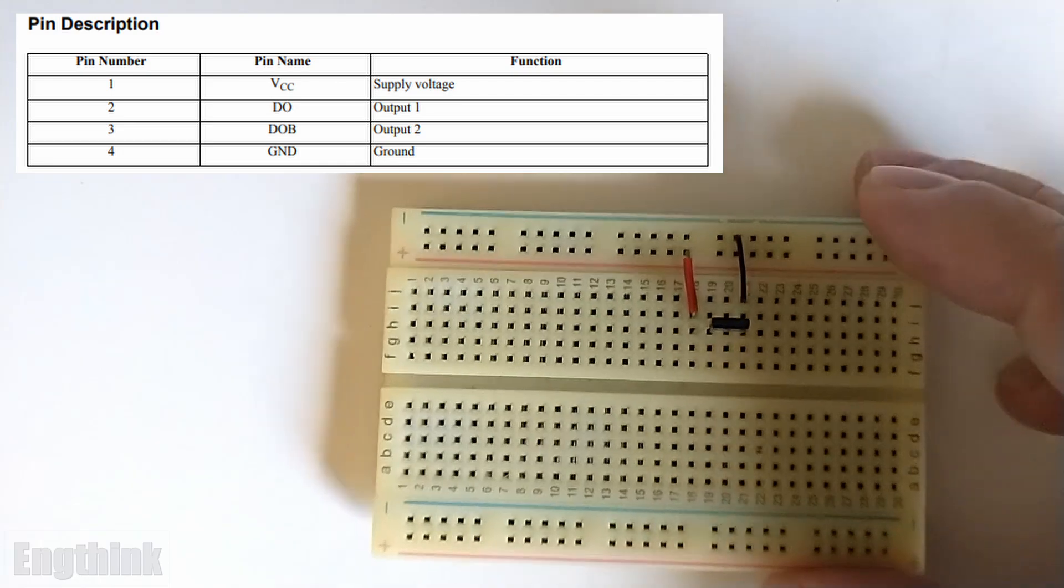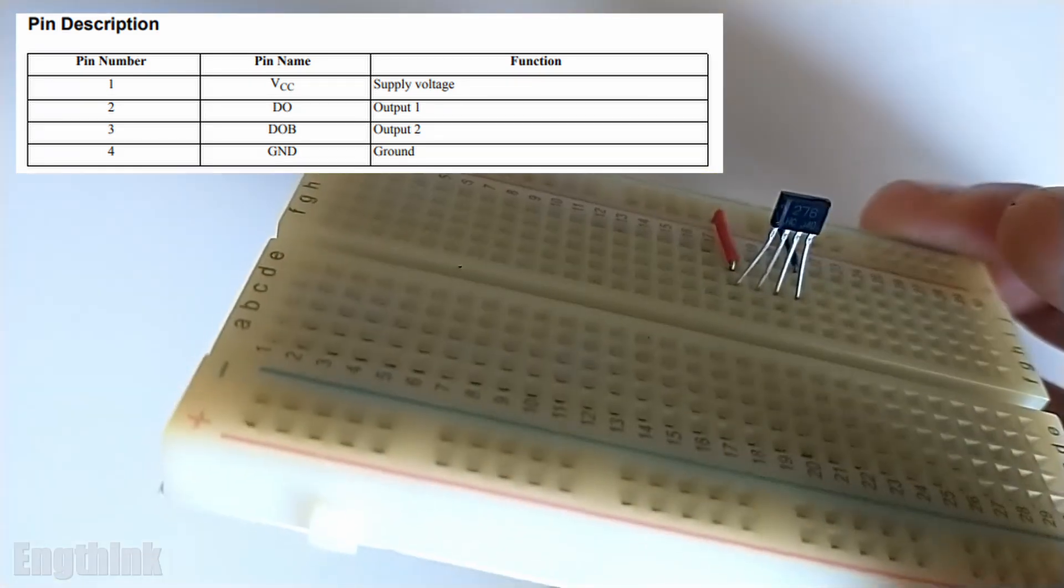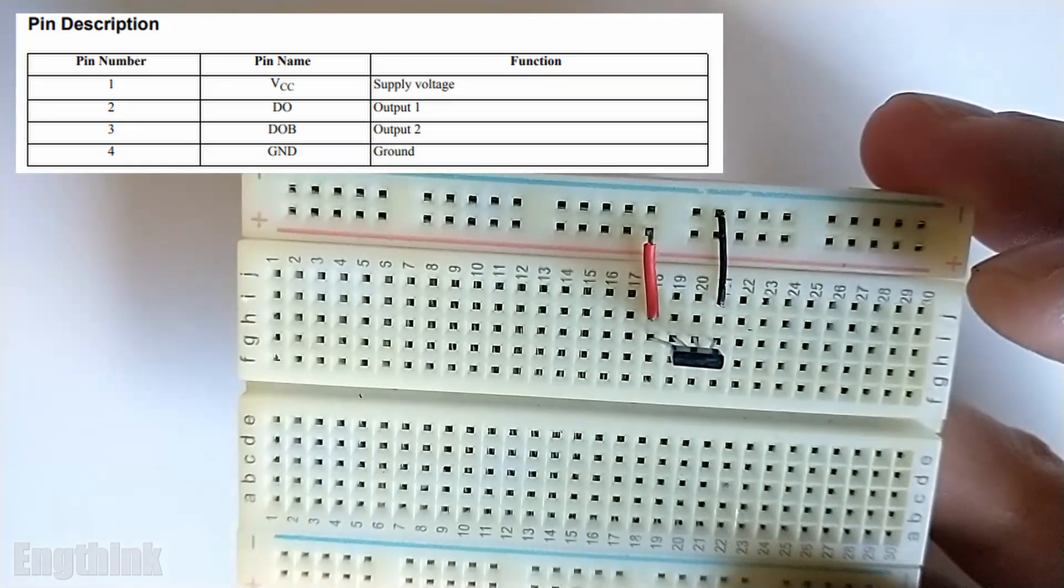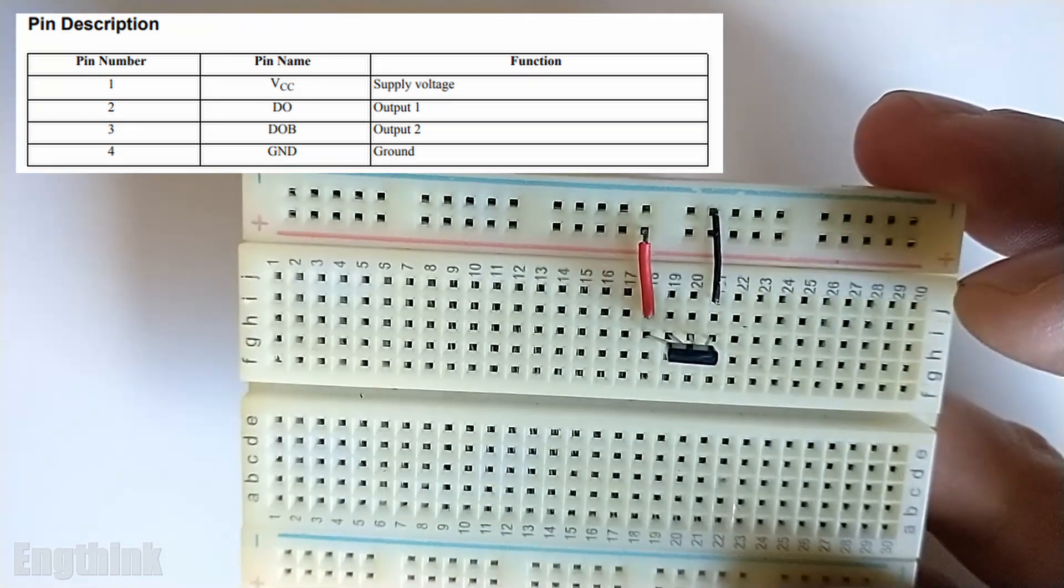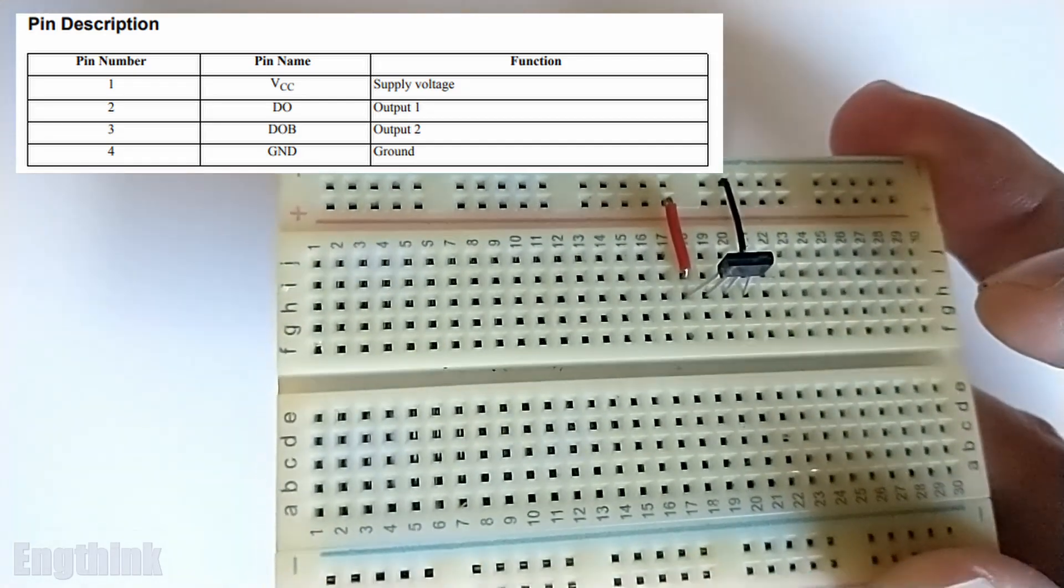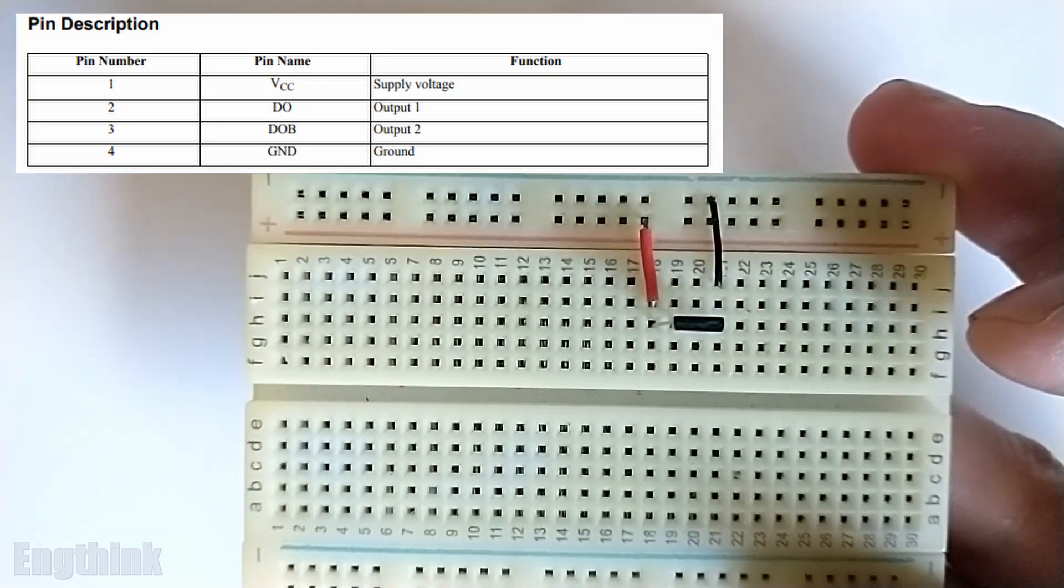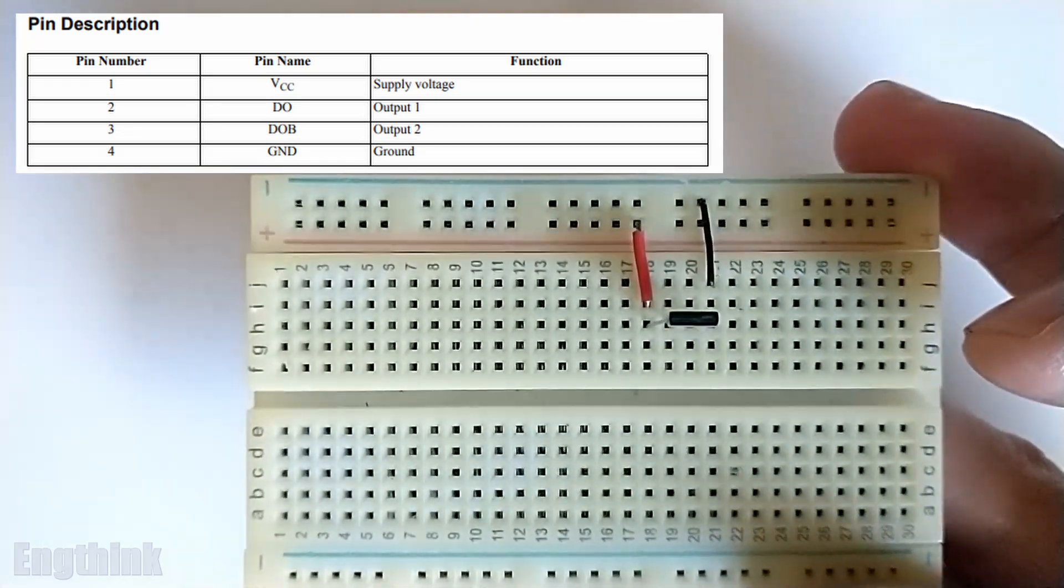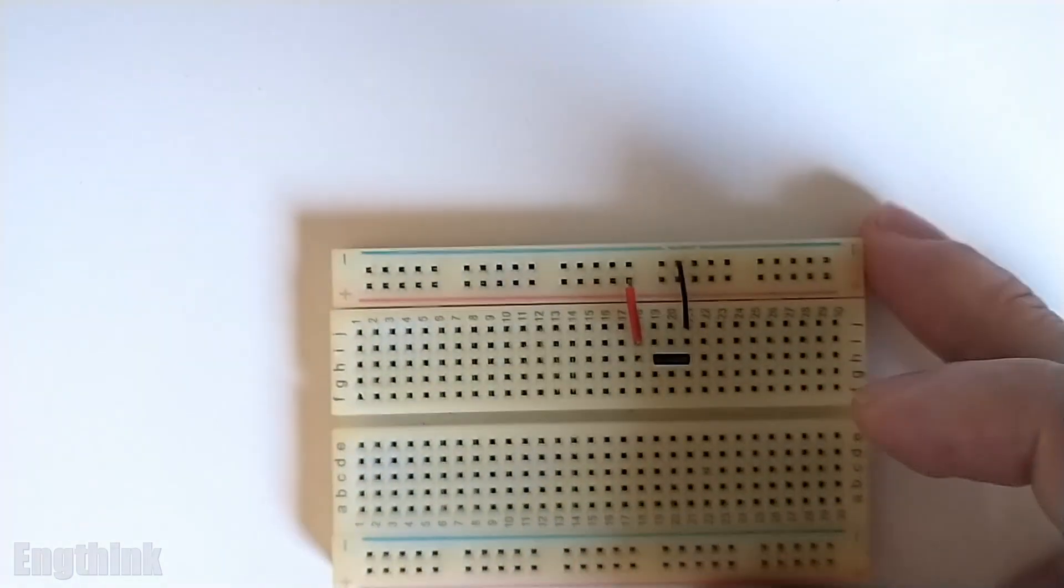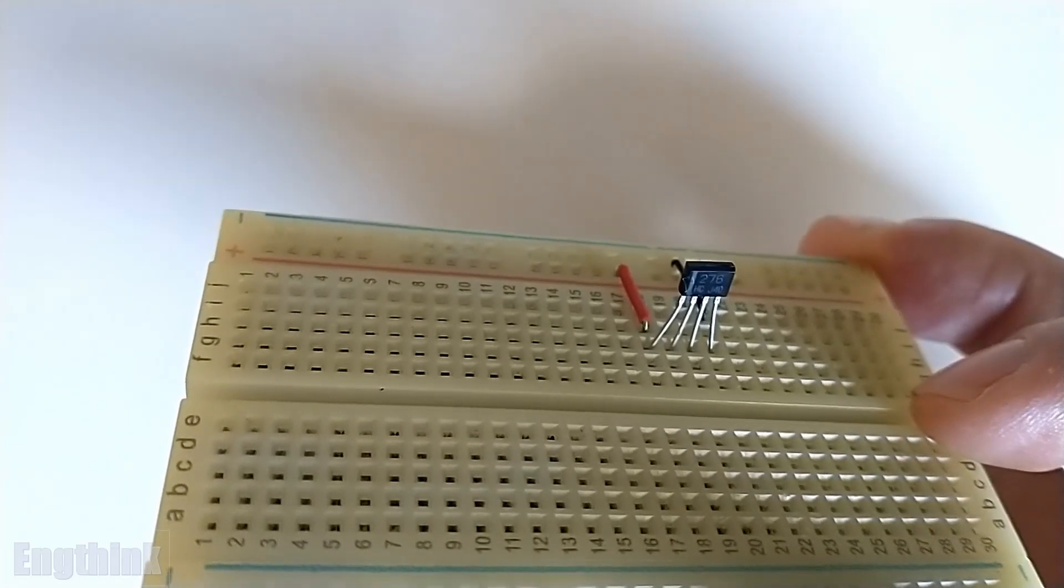I already did the connections between pin one and the positive with a red wire, and the connection with pin number four, that is the GND or negative with the black wire connected to the negative of the breadboard. The remaining pins of the sensor, as we can see in the table, are outputs of the sensor, means that pin two and pin three will change once the sensor detects some magnetic field.